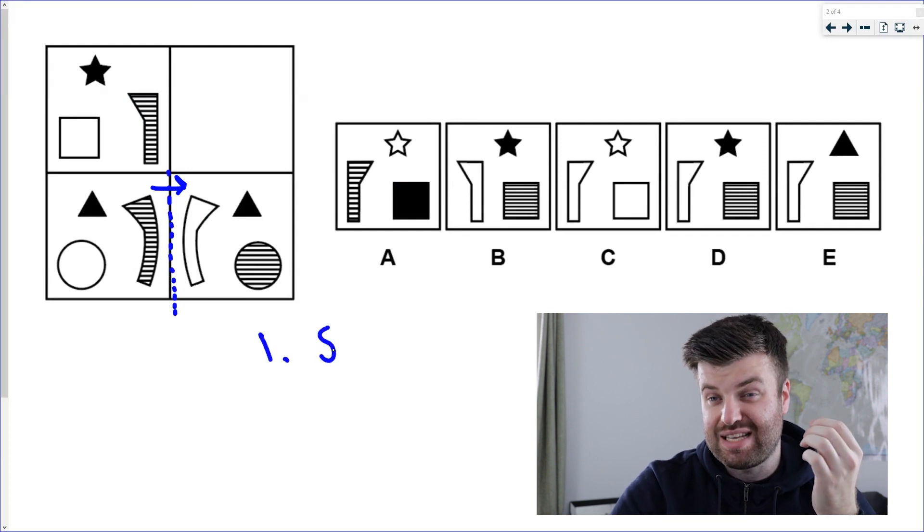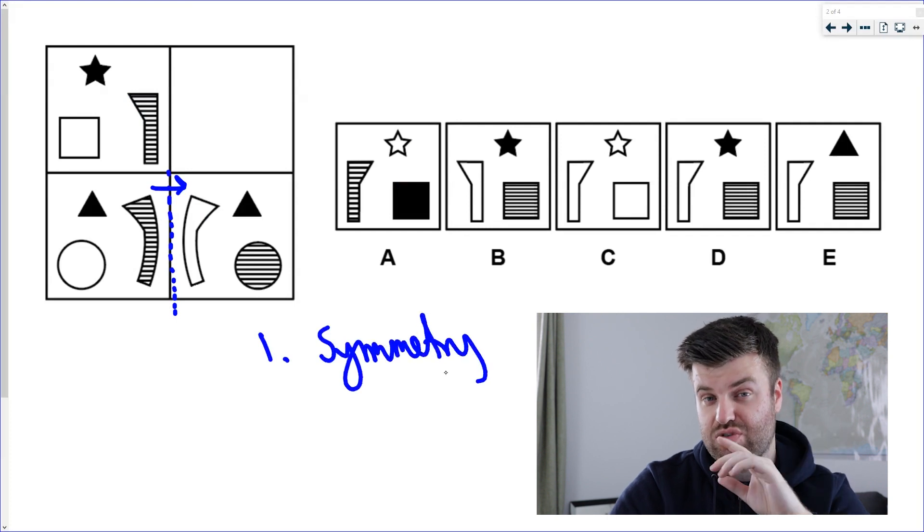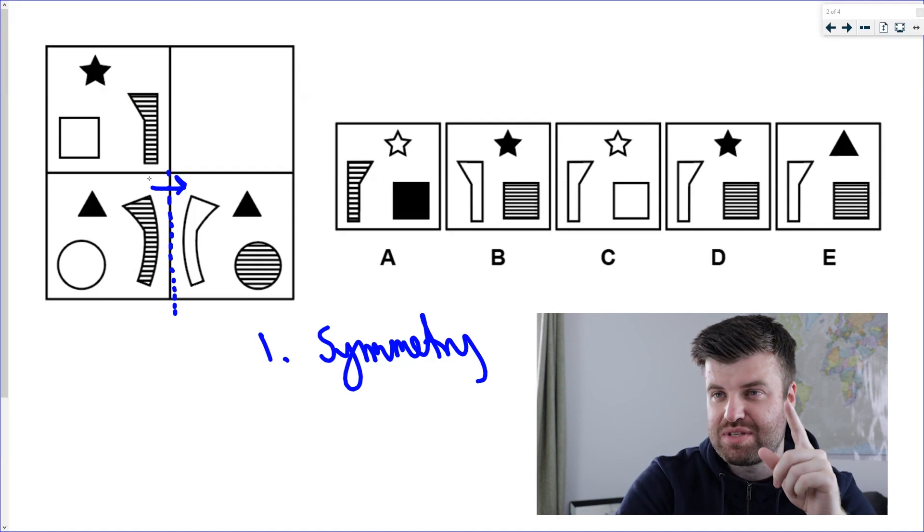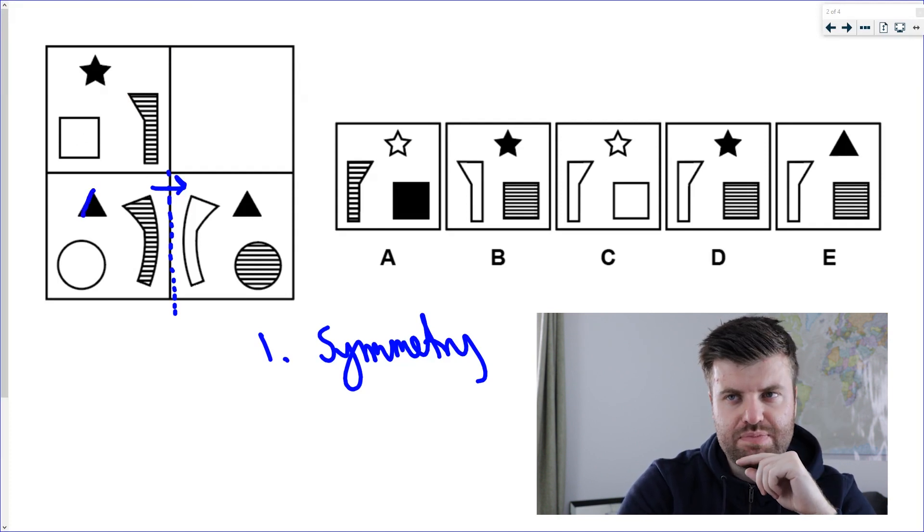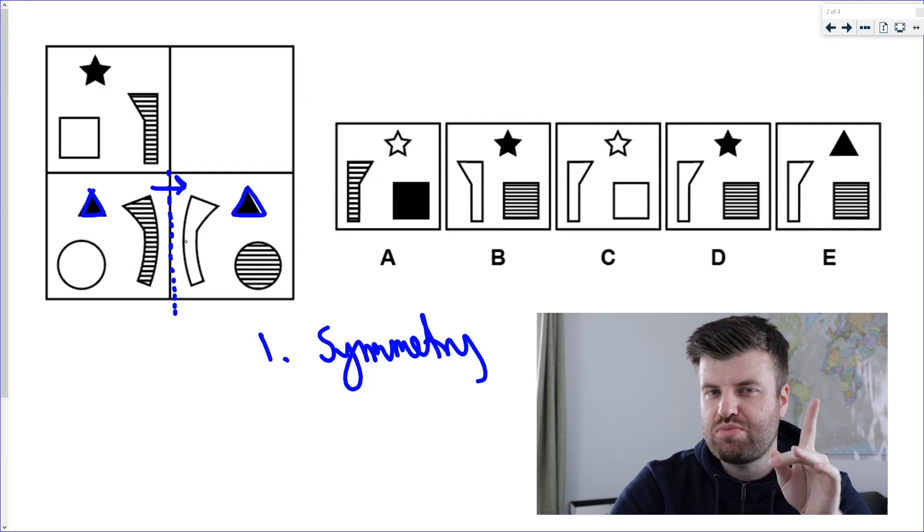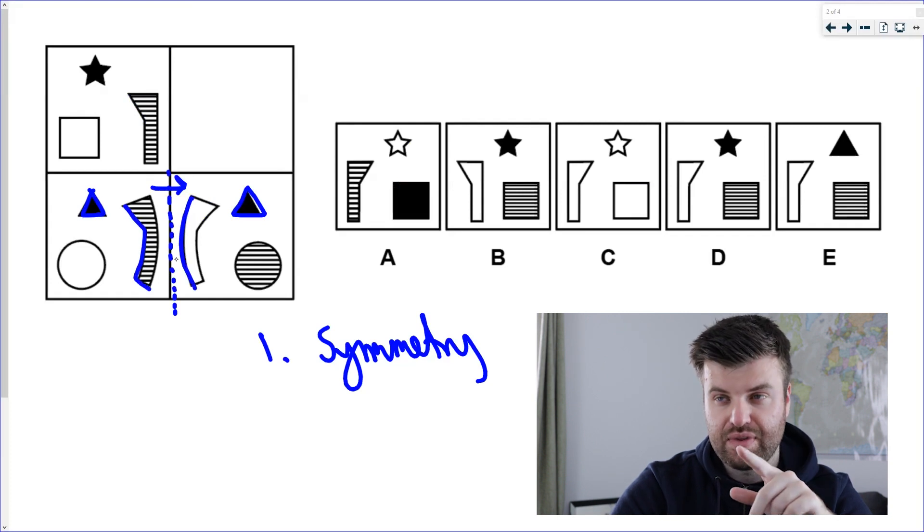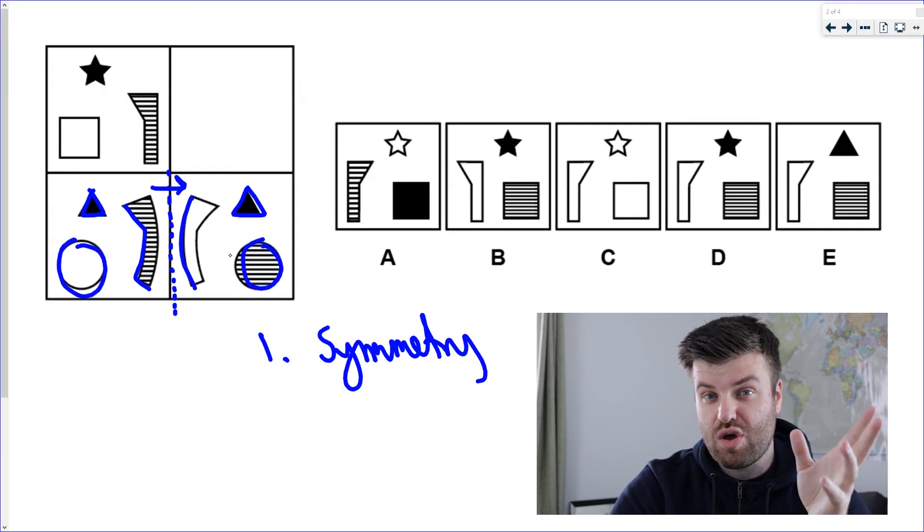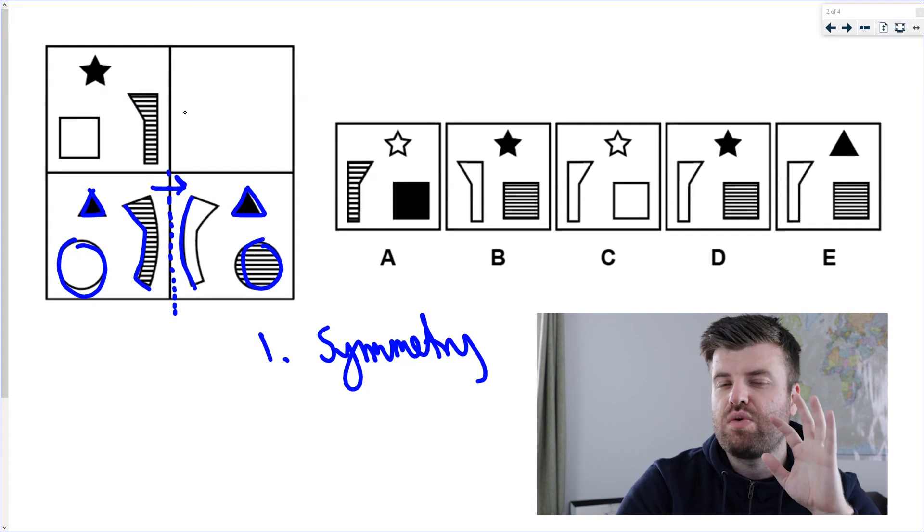So I think one of the rules is that there is a line of symmetry, and that's going to apply to the top tiles too. Also, the shading changes for some of the shapes, not for the triangle. So this black triangle does stay the same—it stays as a black triangle—but the bottom two shapes definitely swap. Can you see here this shape goes from shaded to blank, and the outer shape goes from blank to shaded? So those two shadings invert, they swap.